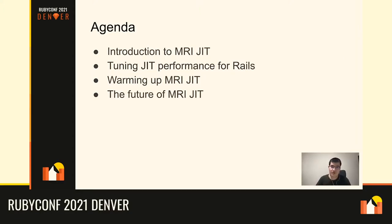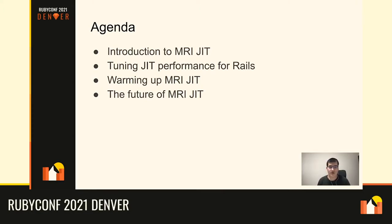Today I'm going to talk about these four things. First, what MJIT we have today. After that, how to tune the JIT performance for Rails applications, because Rails is the main production workload of Ruby usage personally. Then I'll talk about warming up — how we can warm up MJIT performance to peak performance — and lastly, I'll briefly discuss the future of MJIT.